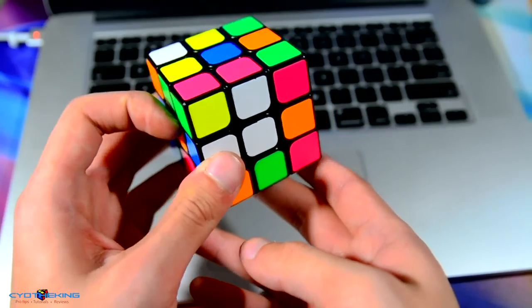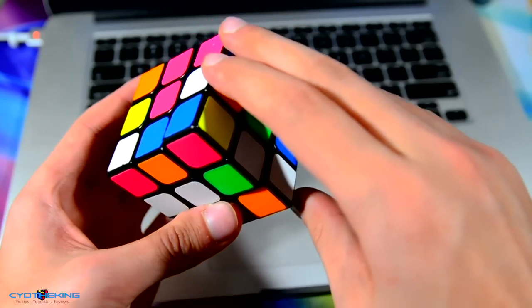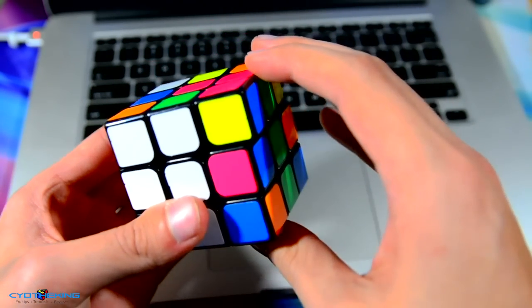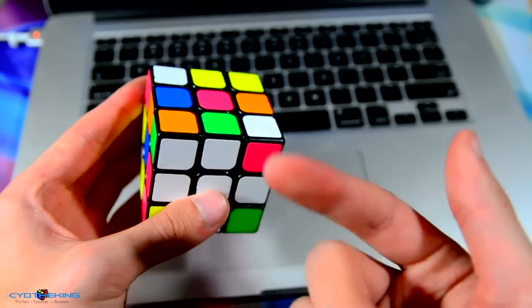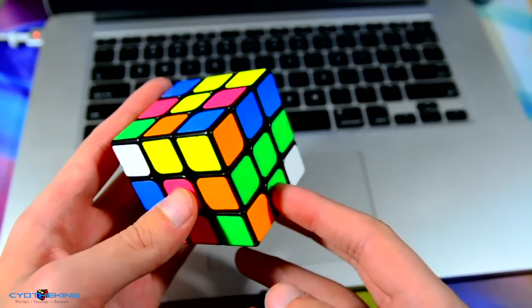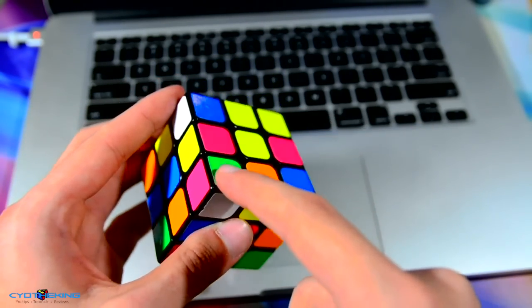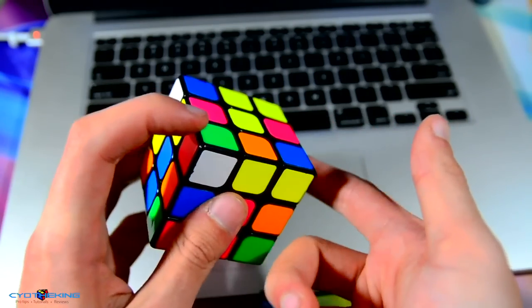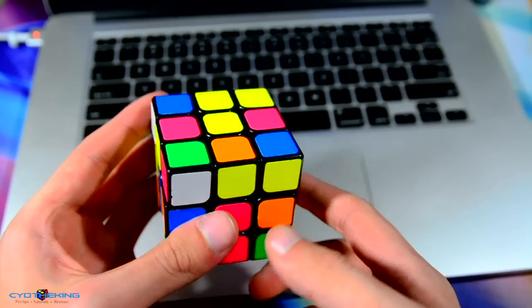I could place this, set that up, do an R F R2, and then I could do a D to solve my cross. While I did that, I was tracking this edge and this corner. While I was planning my cross, I was intentionally trying to track these. So I saw them, went to solve those.